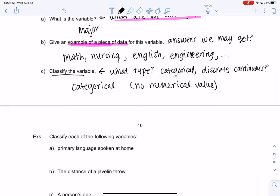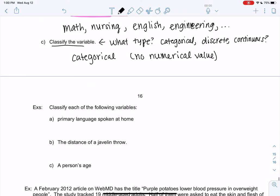So let's classify a couple more variables. What type? Think about this - if I asked you these questions, what would your response be? And that'll help you figure out the type of variable. So if I asked you the primary language spoken at home, you would tell me English or Spanish. That's something in words, no numerical value. So that would be categorical.